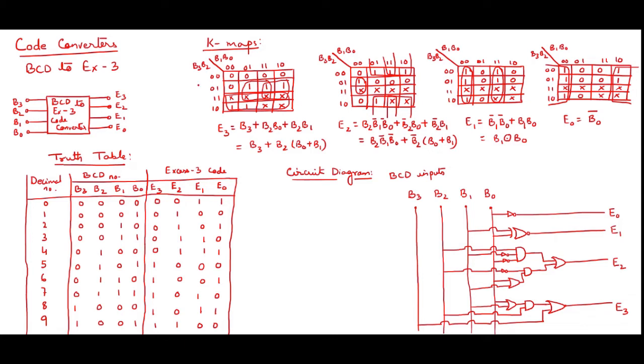You can see the K-maps over here. So for E3, B3, B2, B1, B0. And I have plotted the map over here. For E2 also plotted the map, E1 and E0.